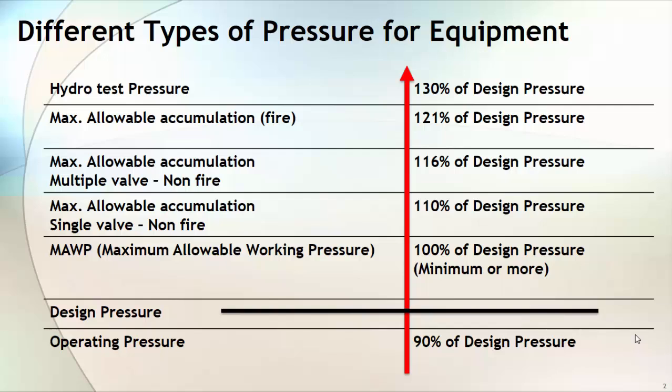Operating pressure is based on your process condition. You add some safety margin on that, which becomes your design pressure. Based on this design pressure, your equipment manufacturer designs the equipment and comes up with a number — usually equal to or more than your design pressure — that becomes your maximum allowable working pressure. Hydrotest pressure is calculated based on the equation given in the construction code. In the case of ASME, hydrotest is normally 1.3 times your design pressure.